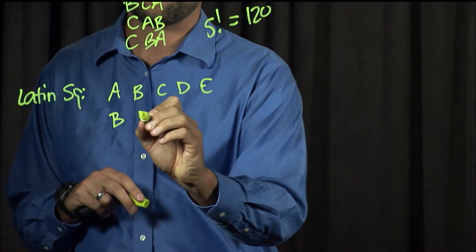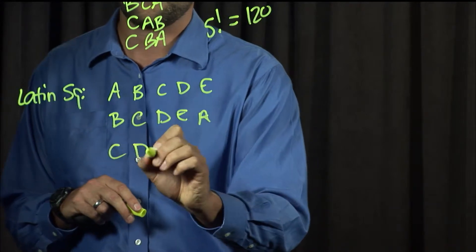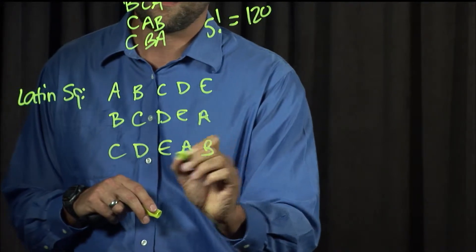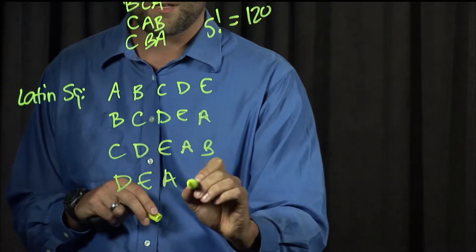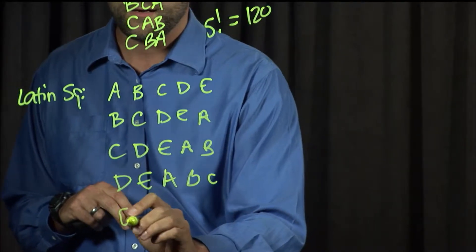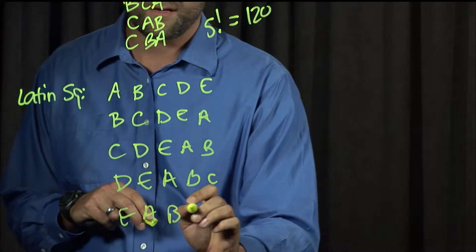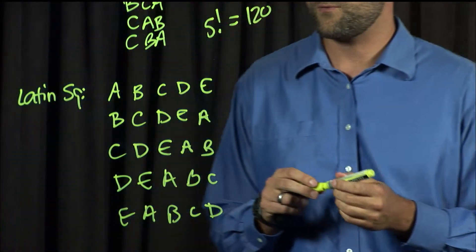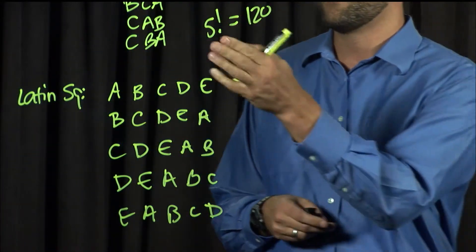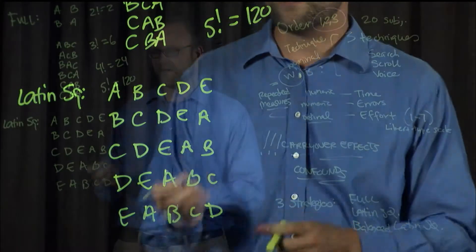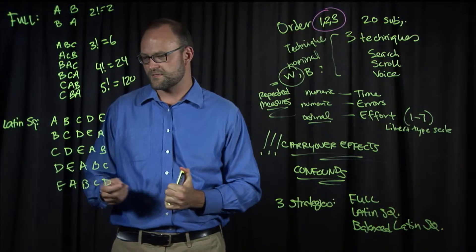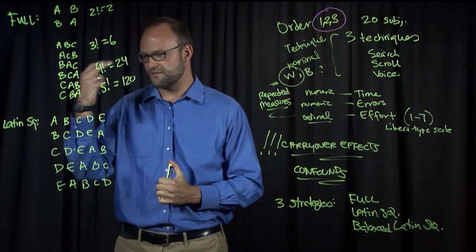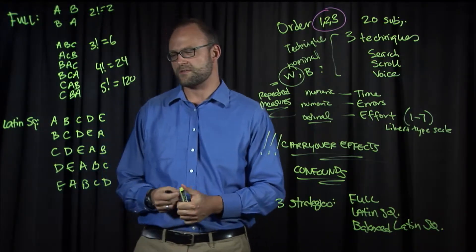So B, C, D, E, A; C, D, E, A, B; D, E, A, B, C; and E, A, B, C, D. You can see with this Latin square of five conditions, every condition occupies each position in the sequence the same number of times. For example, they're all first ones, they're all second ones, they're all third ones, and so on.